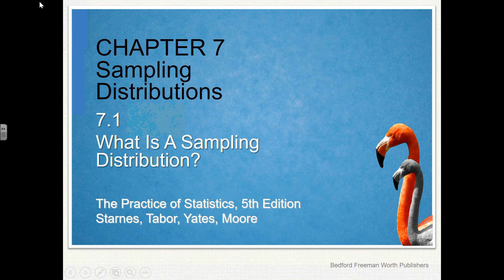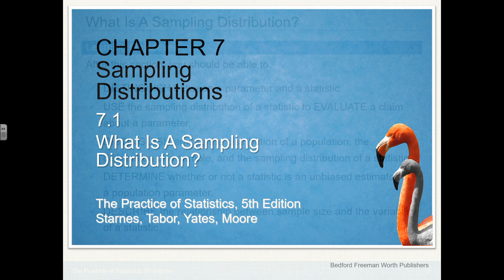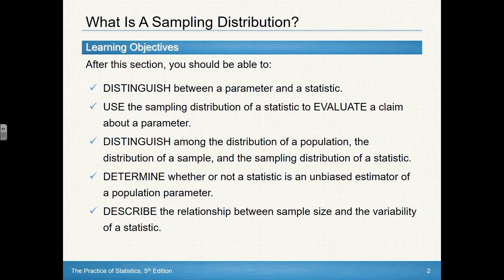Hey everybody, we're here with our first video for chapter 7. We're going to be taking a look at section 7.1 today: what is a sampling distribution. This chapter is really the connection between our conversation that we've been having on probability and the next phase of what we're going to be talking about, which is inference.